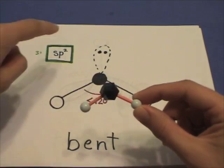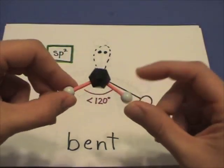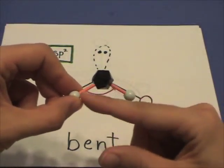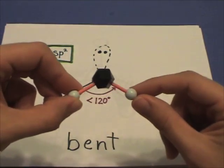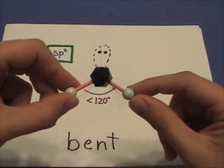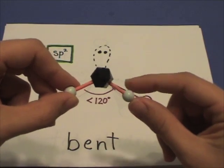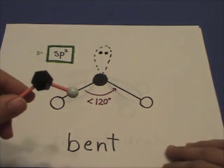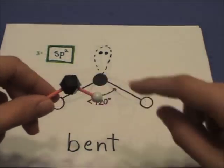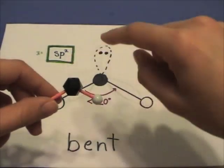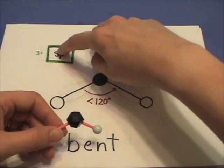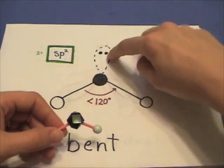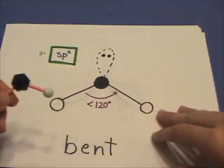The predicted bond angle is slightly less than 120 degrees. This is bent sp2 because there are three electron regions.